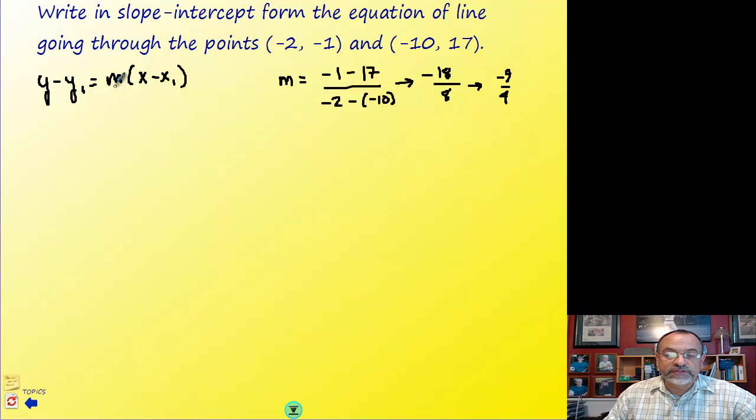So our slope is negative 9 fourths, and then we need to pick a point to put in for x1 and y1. I'm going to use these that have the smaller value because I know I'm going to have to algebraically manipulate this to go to slope-intercept form, so I'd rather use 2s and 1s than 10s and 17s. But you could use 17s if you'd like to do that.